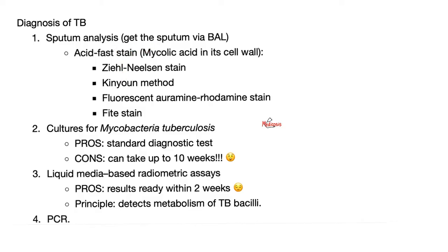After you get your sample, use the acid-fast stain. Why is tuberculosis acid-fast? Because mycobacterium tuberculosis has mycolic acid in the cell wall — long-chain mycolic acid. The acid-fast stain has many techniques, such as Ziehl-Neelsen, Kinyoun, Fite, and the fluorescent auramine-rhodamine stain. With all the others, use good old light microscopy; but with auramine-rhodamine, you need a fluorescent microscope.